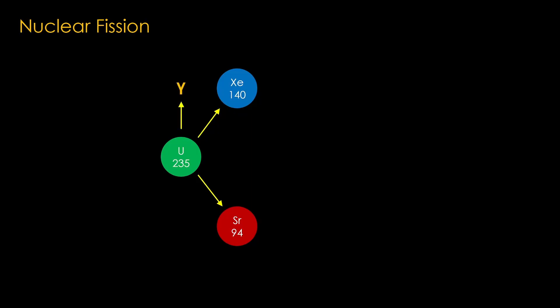There is also a gamma ray created, a photon of very high energy radiation. And there are a few neutrons created. If these neutrons hit other atoms of uranium-235, they will cause those atoms to break apart, or fission, releasing more neutrons.